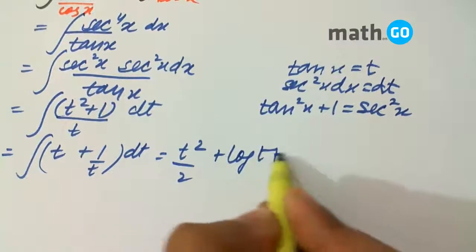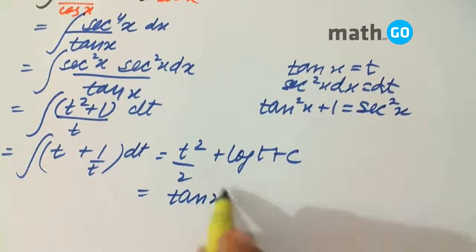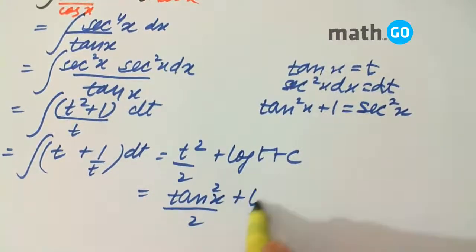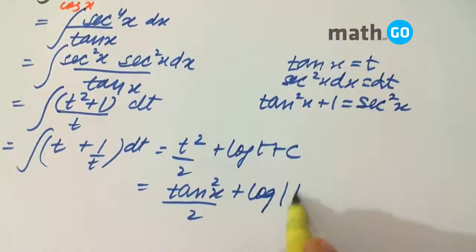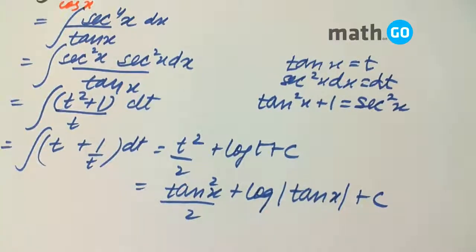Plus log t plus c. This will simply be the value of t that we assumed, that is tan x. Tan square x upon 2 plus log of mod of tan x plus c. Simple. Thank you.